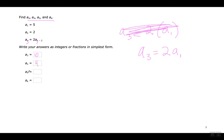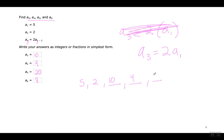The fifth term is going to be two times the third term — the third term was ten, so twenty. The sixth term is going to be two times the fourth term, which is four, so eight. To get each term, I multiply the one two positions back by two: 5→10, 2→4, 10→20, 4→8. That's the sequence.